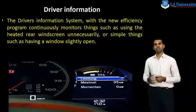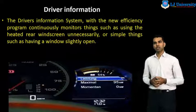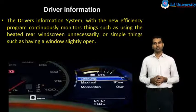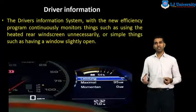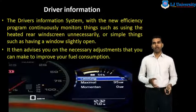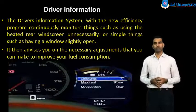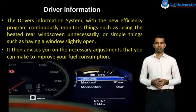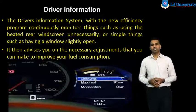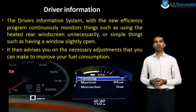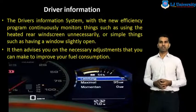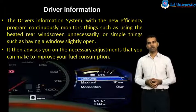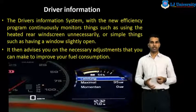The driver information system with the new efficiency program continuously monitors things such as using the heated rear window screen unnecessarily, or simple things like having a window slightly open, and it gives this information to the driver. According to that, we can save and increase fuel efficiency. It then advises you on the necessary adjustments you can make to improve your fuel consumption and increase the efficiency of the car.